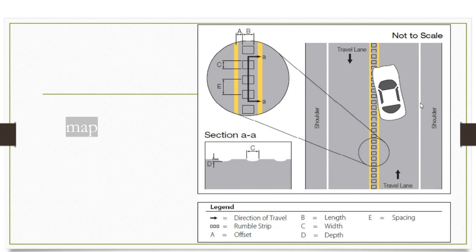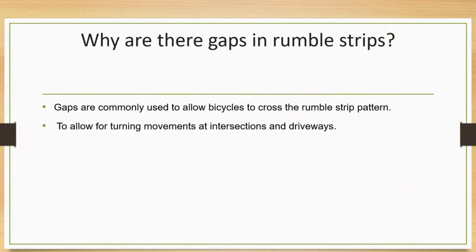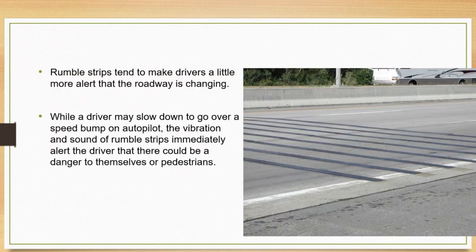There are gaps inside them. These gaps are commonly used to allow bicyclists to travel through — that is why you wonder why there are three or four strips. A bicyclist can use the gap to move on their way. People always reduce their speeds at rumble strips. Rumble strips make drivers more alert that the road is changing — maybe you are coming to a junction, approaching a bigger bump, or entering a school zone. The vibration sound immediately alerts the driver that there could be an impending danger ahead.